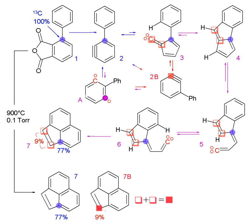Methods for isotopic labeling include: chemical synthesis, enzyme-mediated exchange, and recombinant protein expression in isotopically labeled media. See also: uses of radionuclides, radioactivity in biology, radioactive tracer, isotopomer, isotopolog, isobaric labeling, isotope dilution, infrared spectroscopy of metal carbonyls, and localization of organelle proteins by isotope tagging.